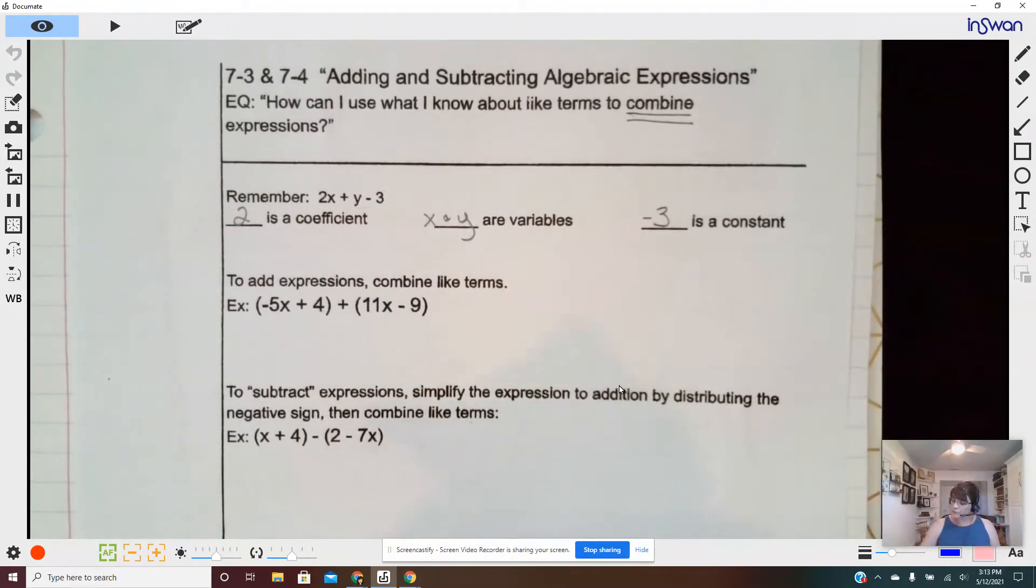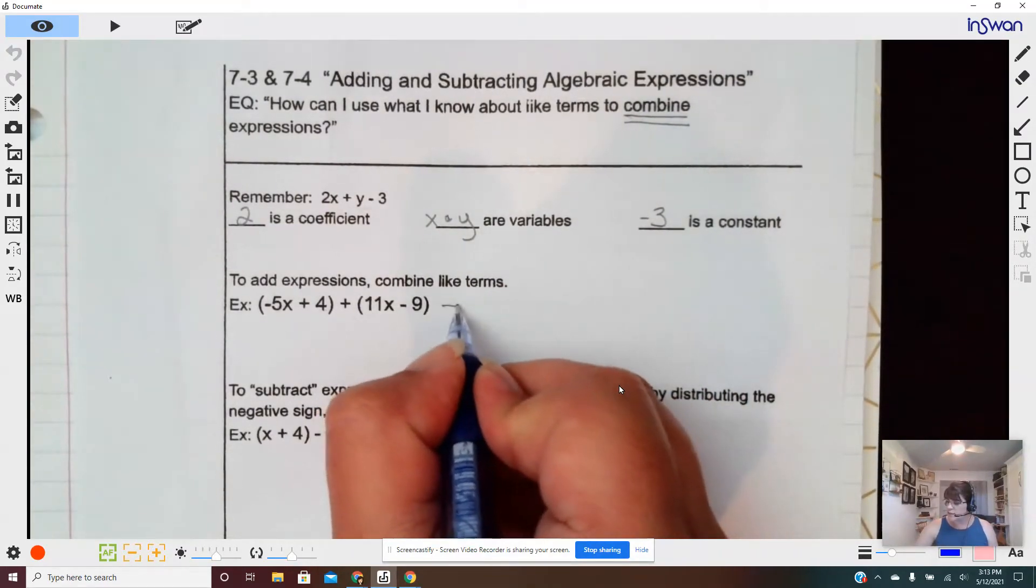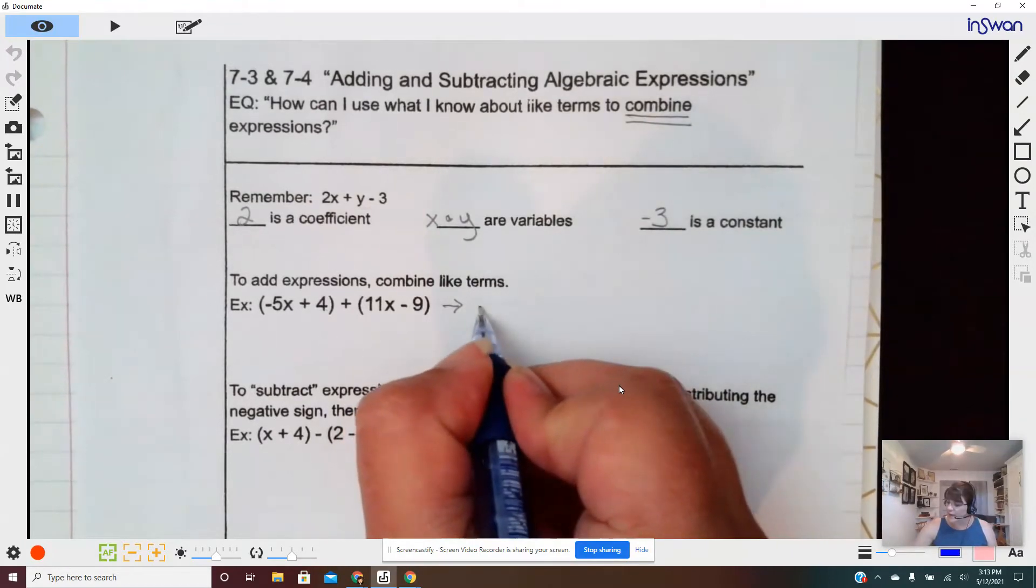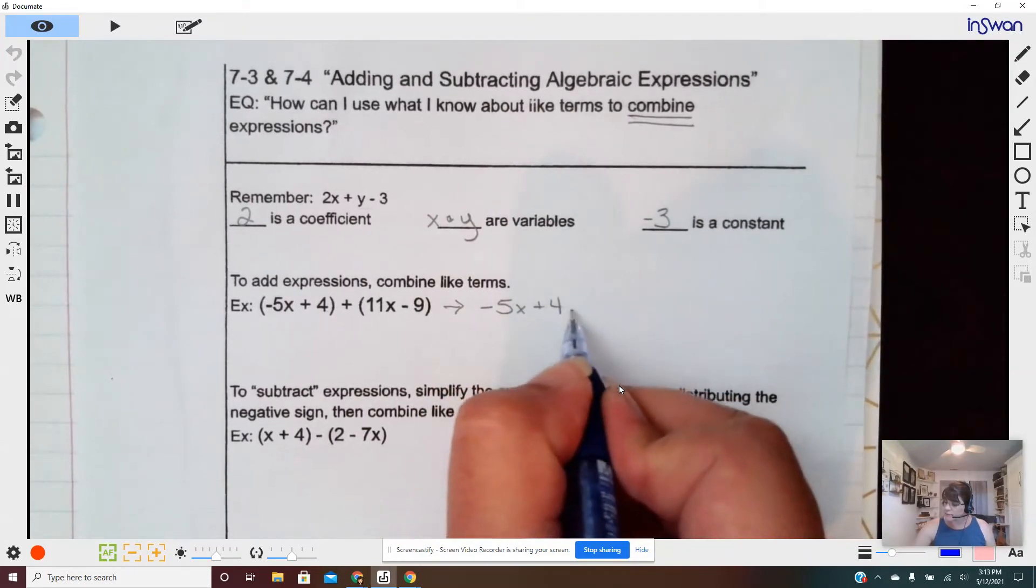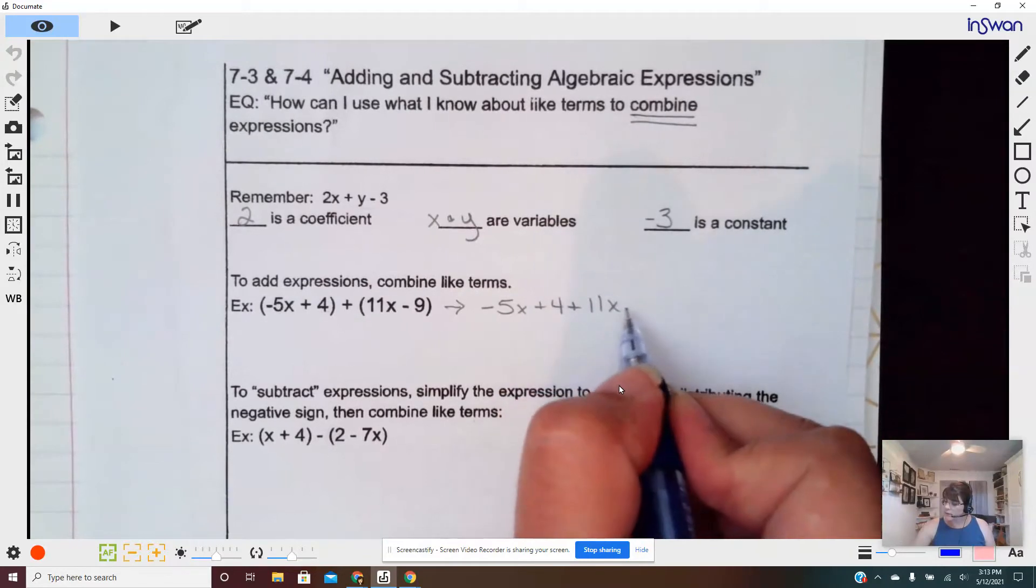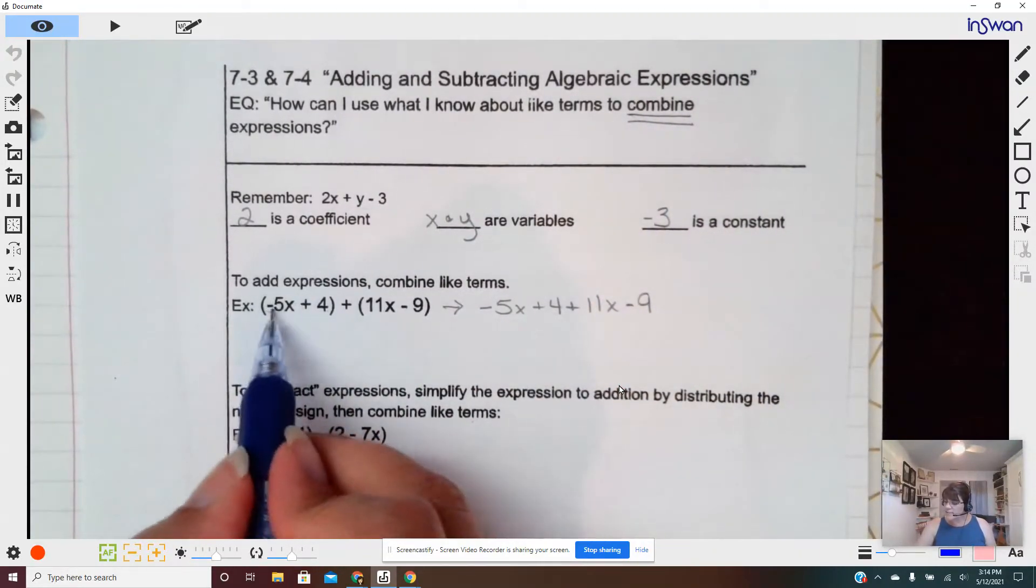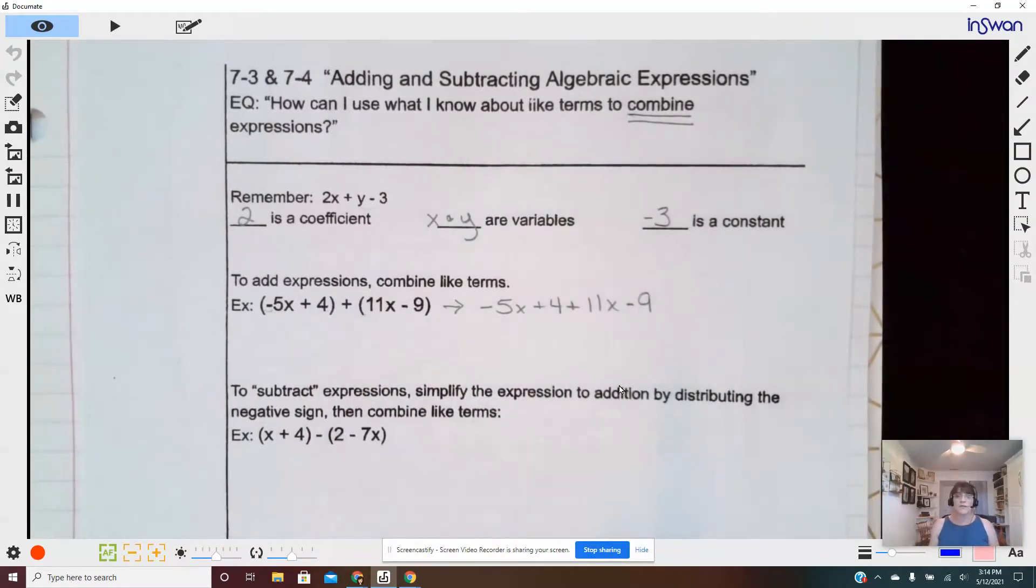So what we're going to do, and I should have given myself more space, is we're going to rewrite this. So I'm going to do it over to the side without parentheses, negative 5x plus 4 plus 11x minus 9. Now notice, every single thing just keeps the sign that was with it.